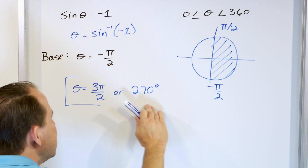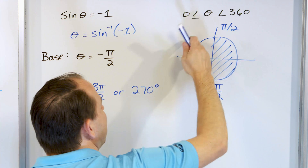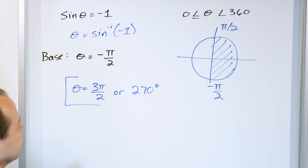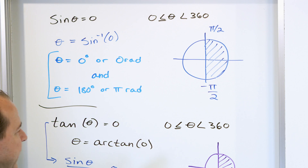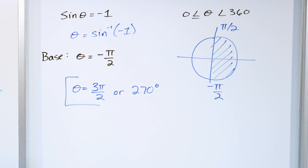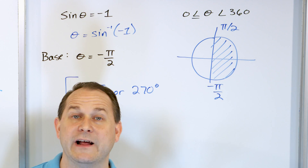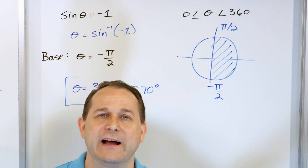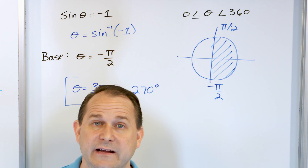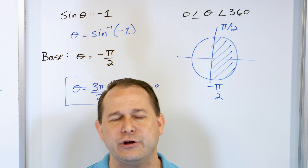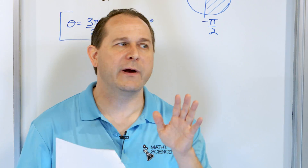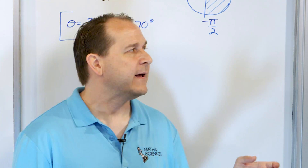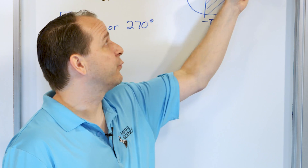In all the other problems, I had two angles that worked and they were 180 degrees apart. Here I give you a problem where you only have one angle in the full circle range, and you also had to reject the base angle and count in the positive sense to get there. That's why I can't tell you to just always get the answer and add 180 degrees — you have to know what the problem is asking and think logically. This problem only has one solution in this range.